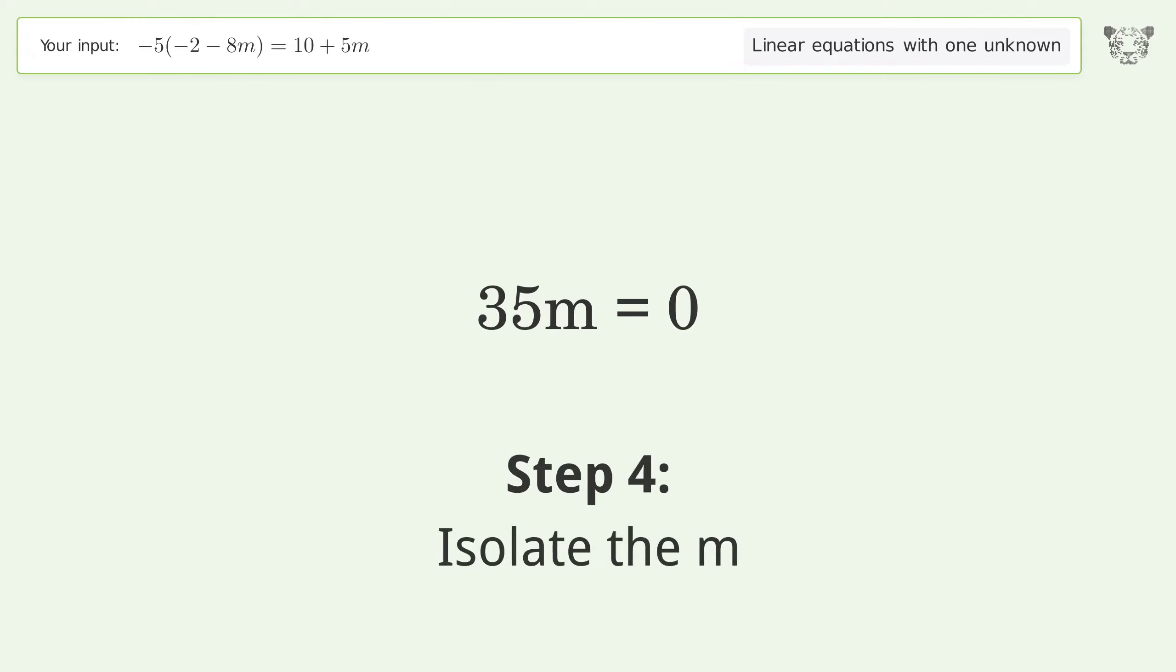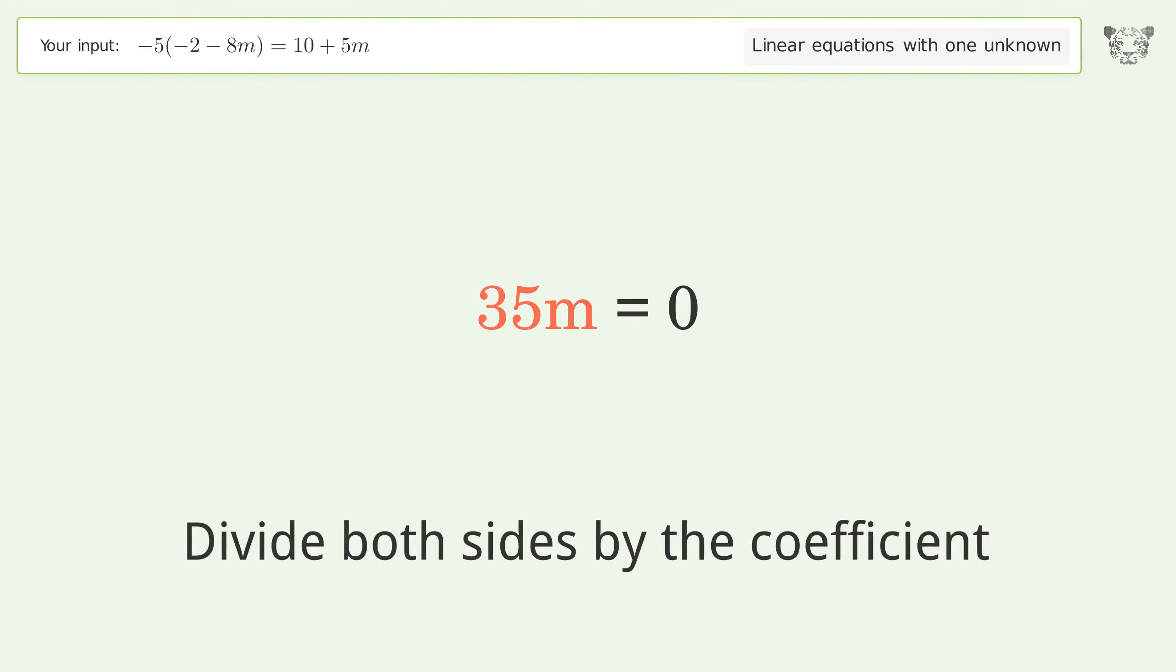Isolate the m by dividing both sides by the coefficient. And so the final result is m equals zero.